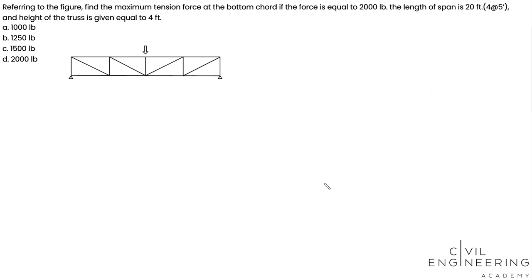Hey, how's it going everybody? Welcome back to Civil Engineering Academy, this is Jason. Alright, so this question said referring to the figure, let's find out the maximum tension force at the bottom chord if the force is equal to 2,000 pounds and the length of the span is 20 feet at 5 feet, so each spacing is 5 feet.